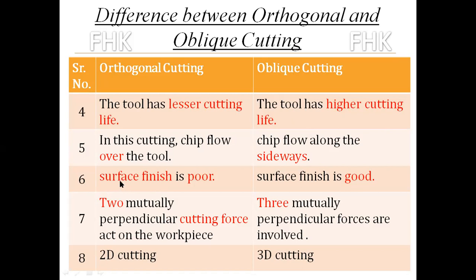Sixth differentiation point: Surface finish is poor in orthogonal cutting. The surface produced on the workpiece will have poor finish due to the continuous rubbing action of the chip on the workpiece at the chip-workpiece interface. In oblique cutting, the surface finish is good because the wear and rubbing action is reduced.